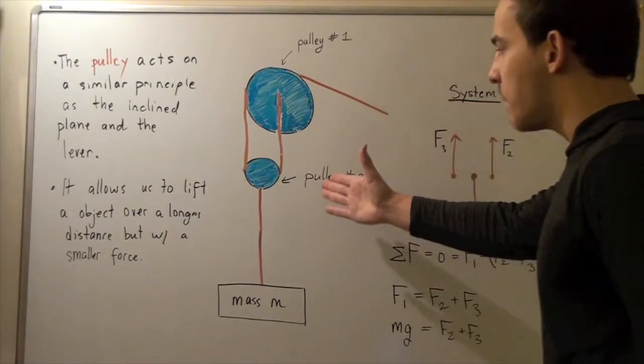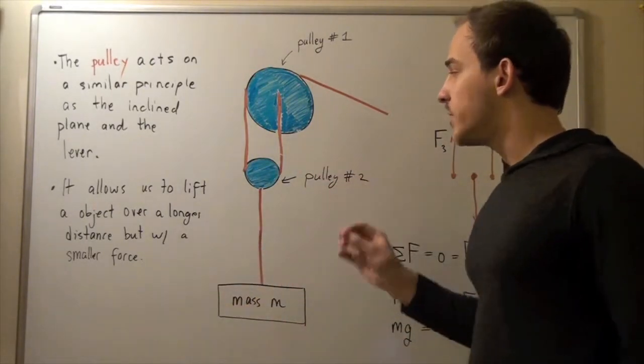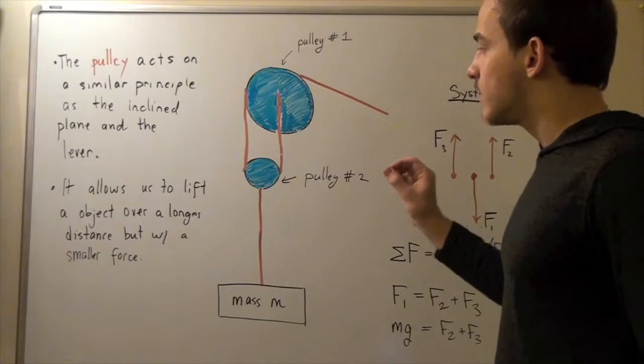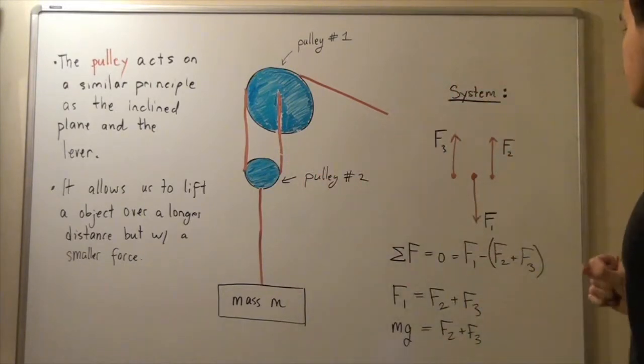Why are we choosing pulley number two? Well, that's arbitrary. We can choose any system. But in this case, let's choose pulley number two because this system will allow us to see what forces act on my object, my pulley number two.